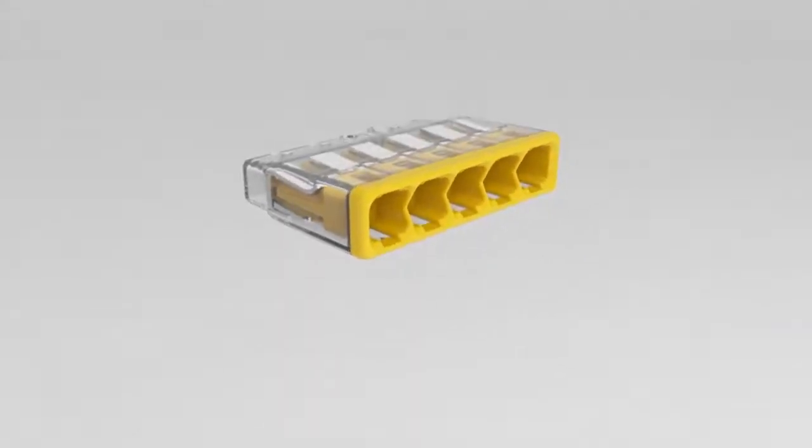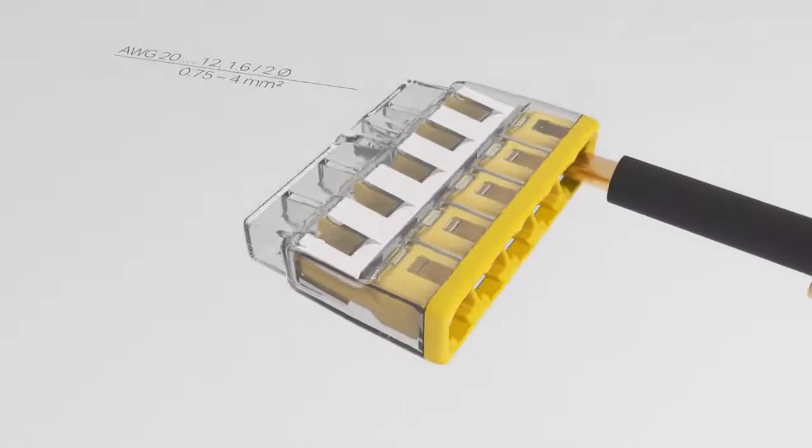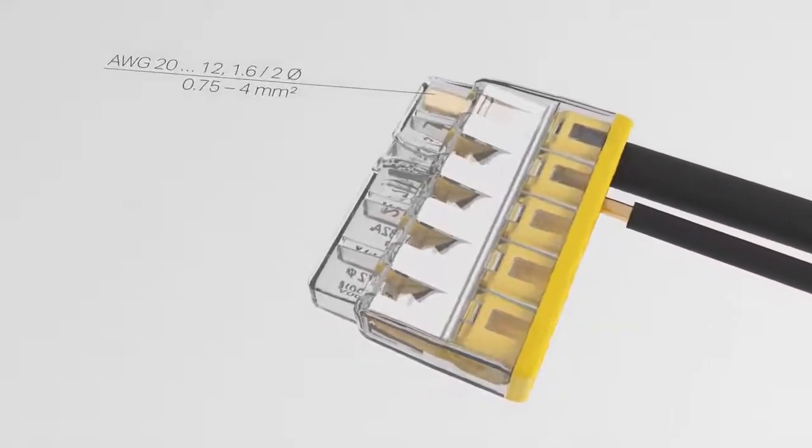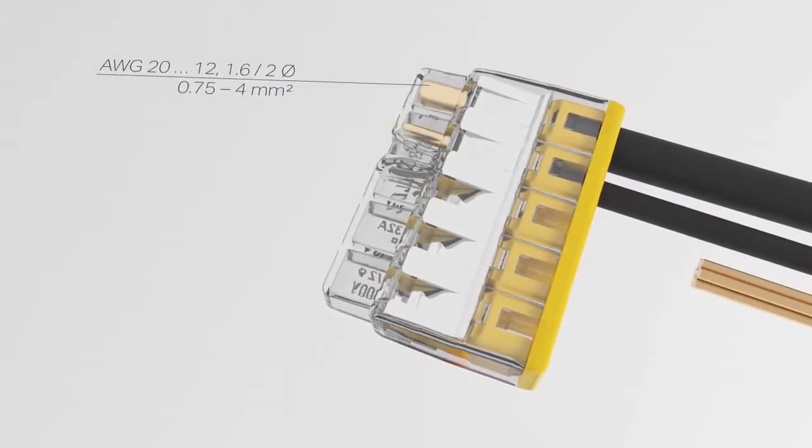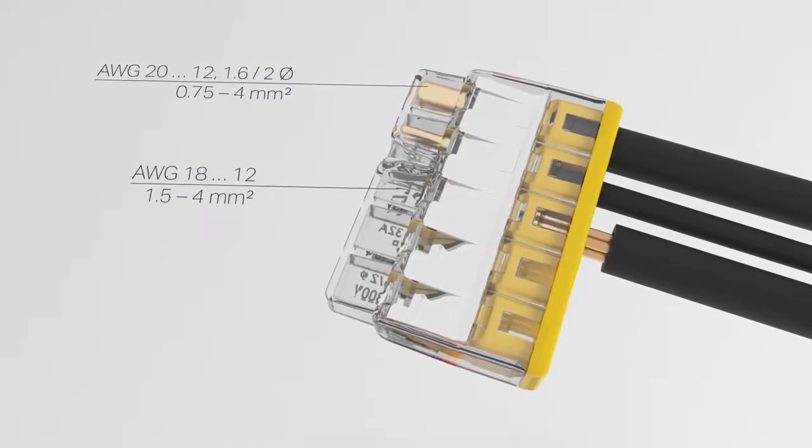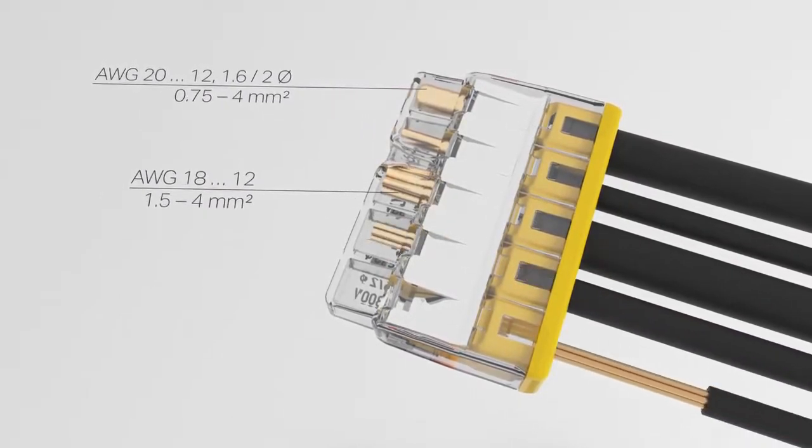Solid conductors with cross sections ranging from 0.75 square millimeters to four square millimeters and stranded conductors from 1.5 square millimeters to four square millimeters can be reliably connected just by pushing them in.